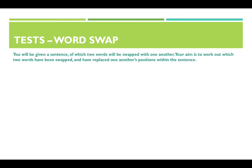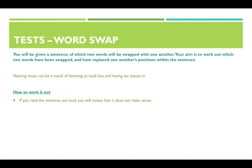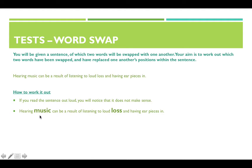Word swap: you will be given a sentence in which two words have been swapped with one another. Your aim is to work out which two words have swapped positions. The sentence is: 'Hearing music can be a result of listening to loud loss and having ear pieces in.' Reading it aloud, it doesn't make sense. Swapping 'music' and 'loss' gives: 'Hearing loss can be a result of listening to loud music and having ear pieces in.' That is grammatically correct, so those are the two words you would choose.